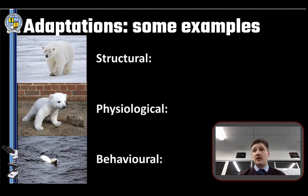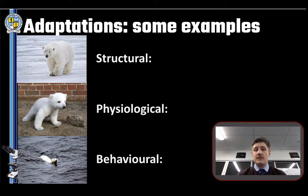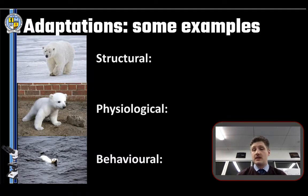The polar bear is a really cool example for each of the types of adaptations. Structurally, the bears are pretty big but they've got well-designed paws covered with small soft papillae — dermal bumps — which provide traction on the ice. They also have a really thick layer of blubber or fat that keeps the polar bear warm when it's swimming, which is a pretty good adaptation to have when you're swimming in the Arctic Circle.